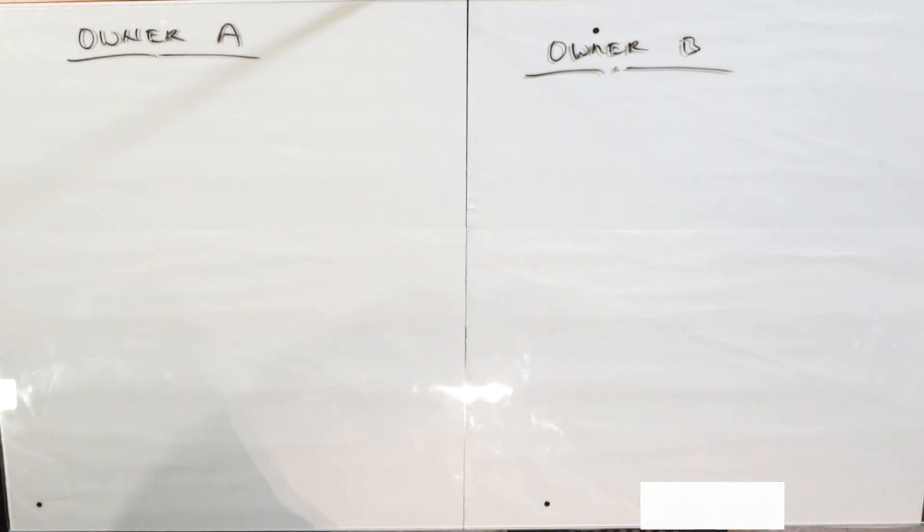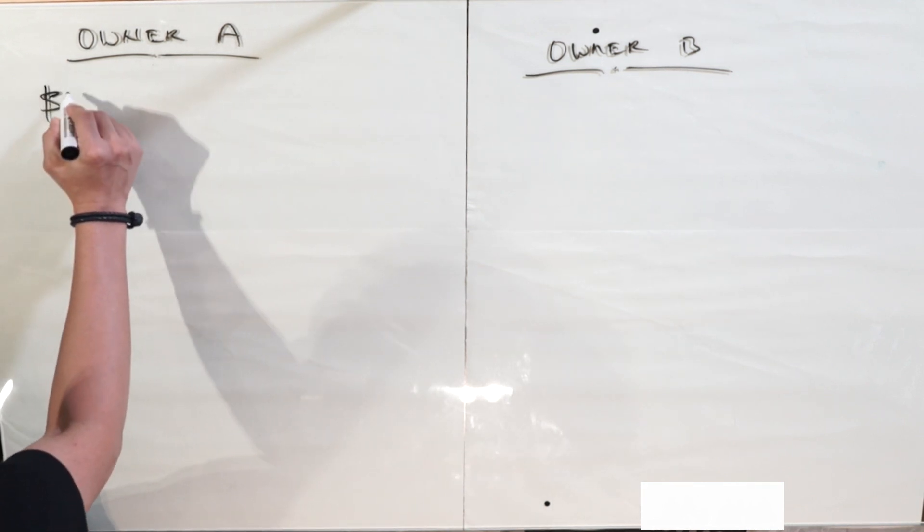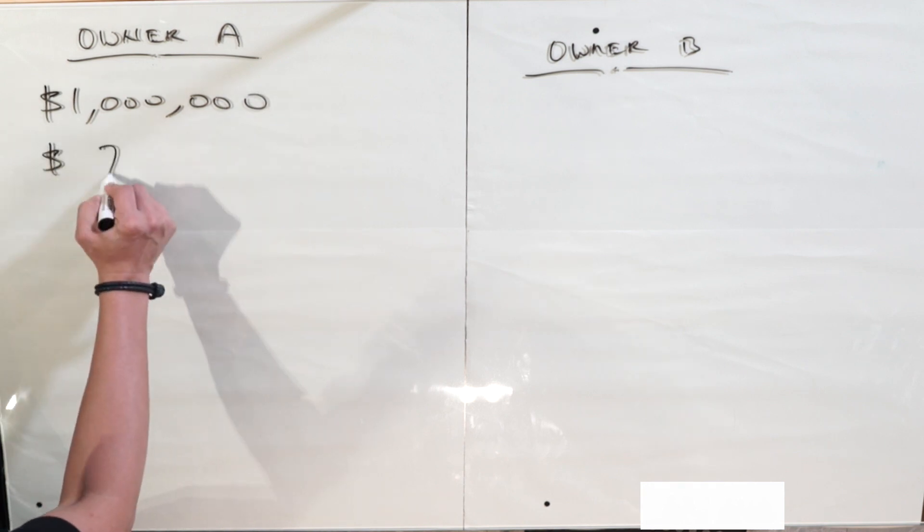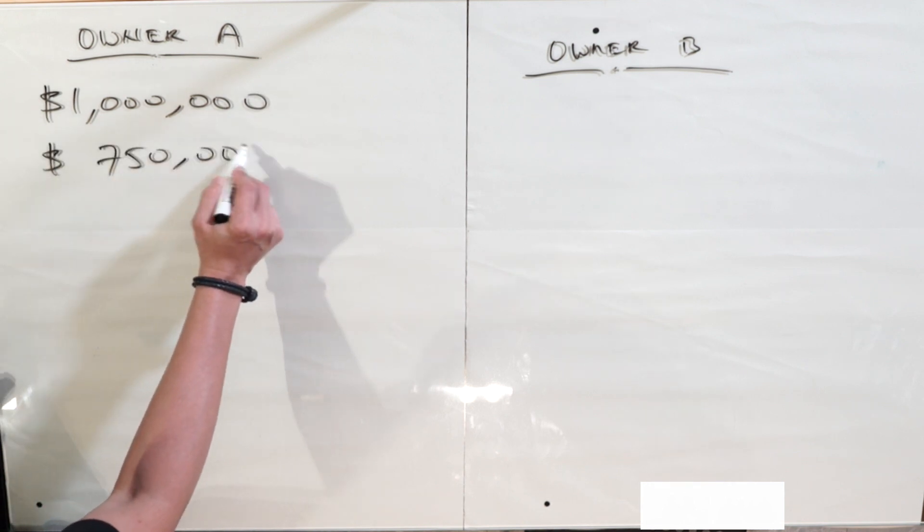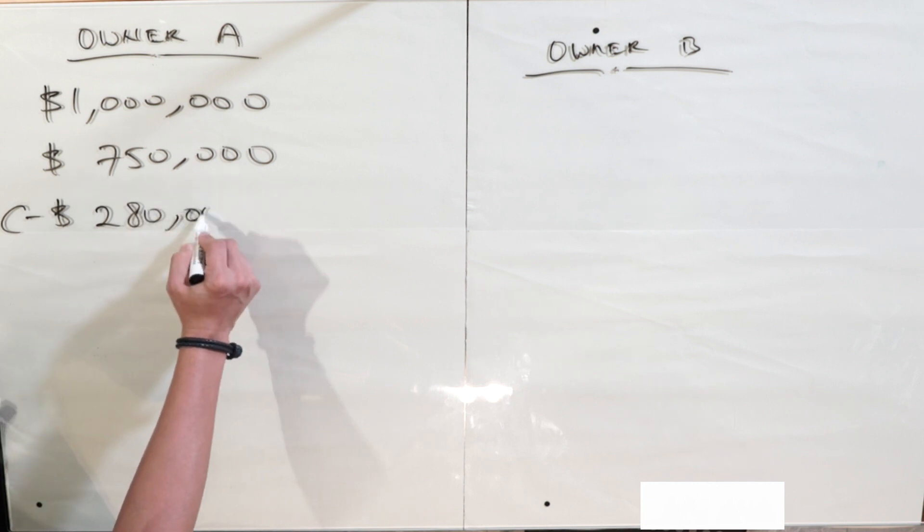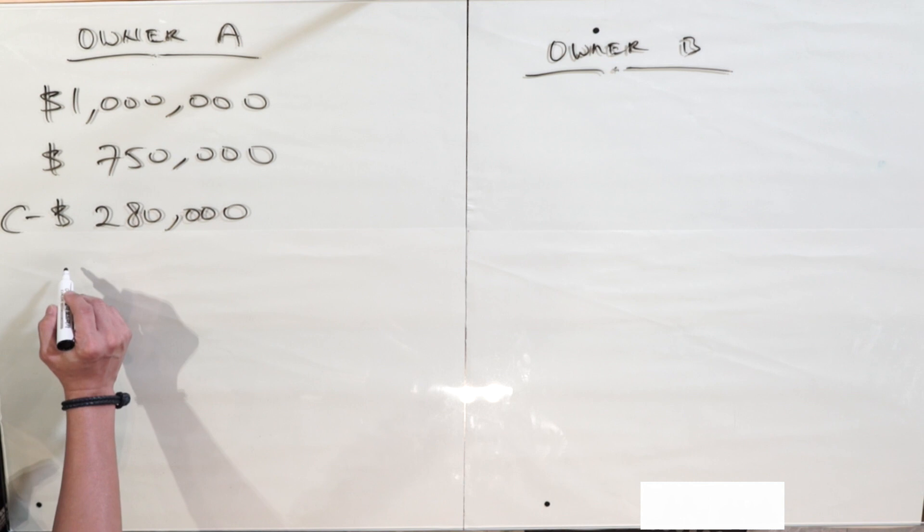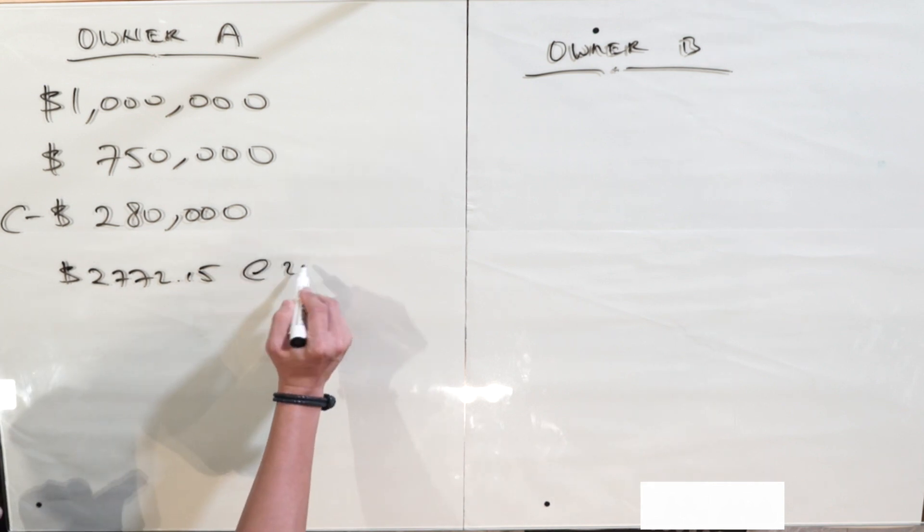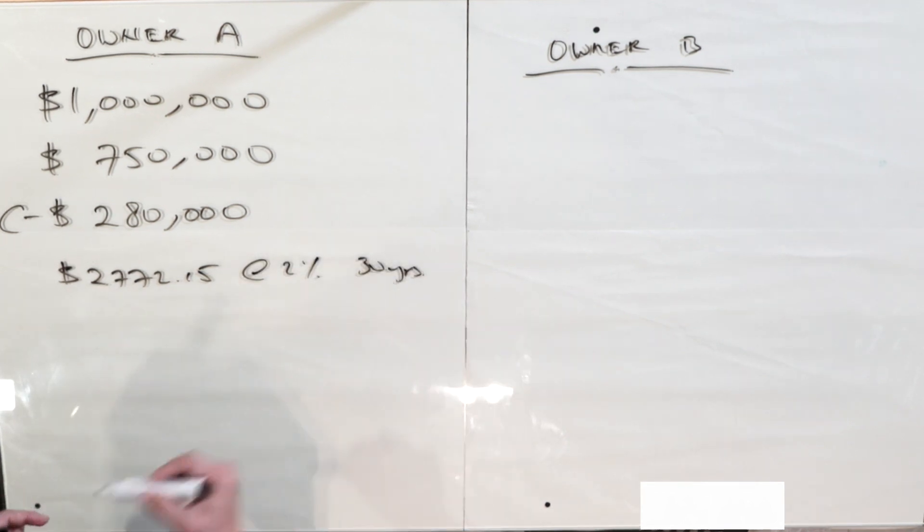So we have property owner A buying a property at $1 million, took on a loan for $750K, and capital payment is $280K. This actually includes the stamp duty. So the monthly payment for both of them will come out to $2,772.15. This will be at 2% for the next 30 years.